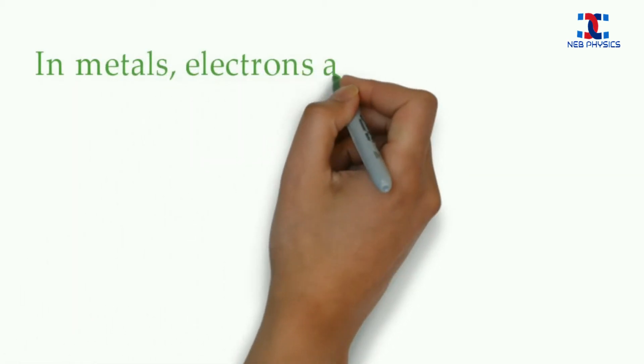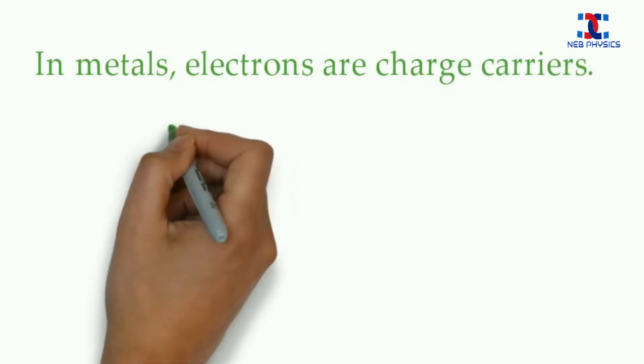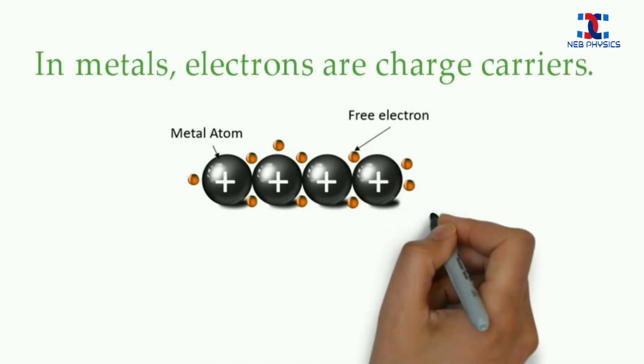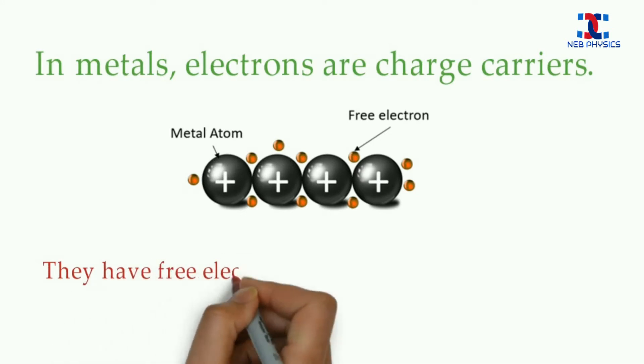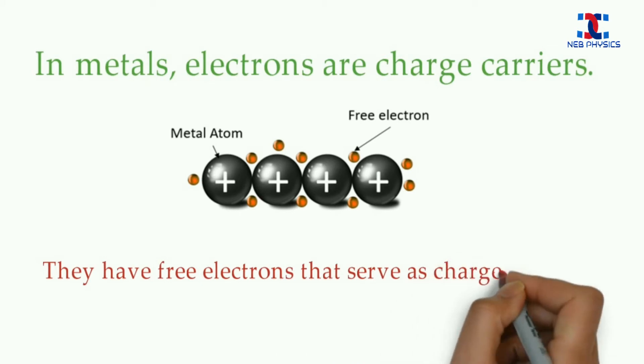Now if we look in the metals, the electrons are charge carriers. The metal is made of immobile metal atoms and free electrons. And these free electrons in normal temperature keeps on moving randomly inside the metal. Now let's try to understand how these free electrons helps to carry charge with the help of this animation.